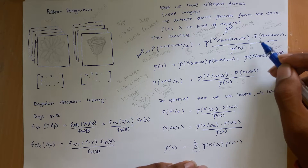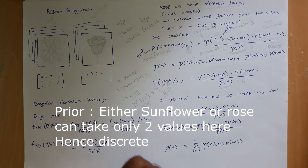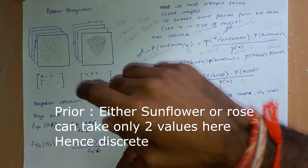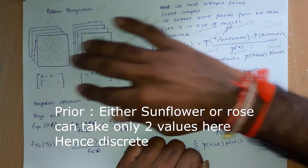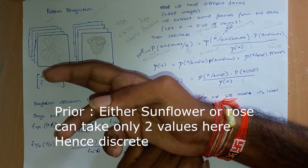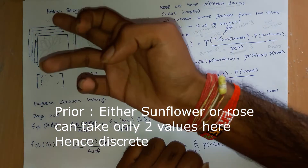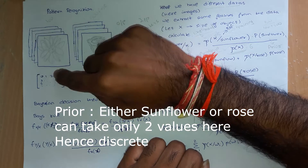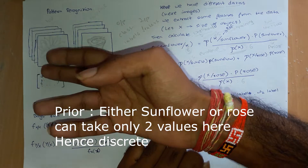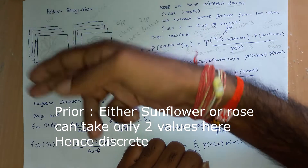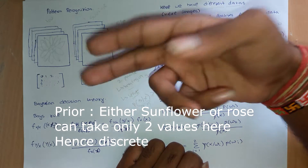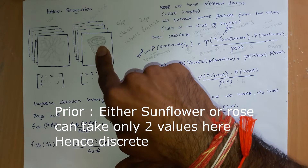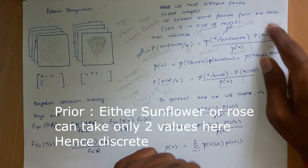The prior uses a capital P, so prior is discrete. What is the probability of a particular image being a sunflower? Say I have 100 images of sunflower and 500 images of rose. The probability of sunflower will be 100 upon 600, that is 1 by 6, and the probability of rose will be 5 by 6. So you can see it is discrete — the random variable takes only the values 5/6 and 1/6.